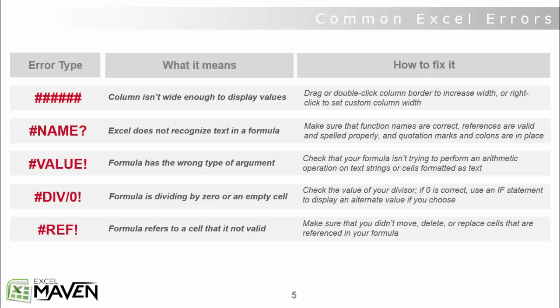The first is just a series of hash marks or pound signs. What that typically means is that the column just isn't wide enough to display your values — that's the most common cause. In some cases you might get this if Excel is having a hard time recognizing a particular date value, but more often than not the easiest fix is just to drag or double-click your column border to increase the width, or right-click to set a custom column width. Super easy fix.